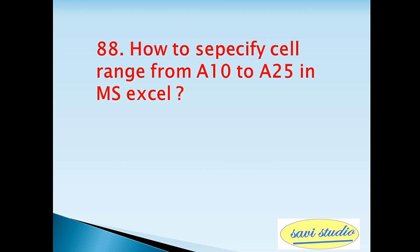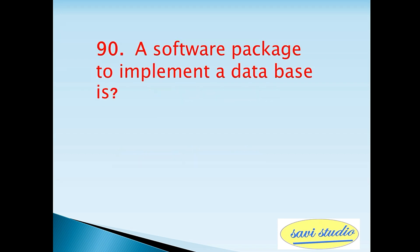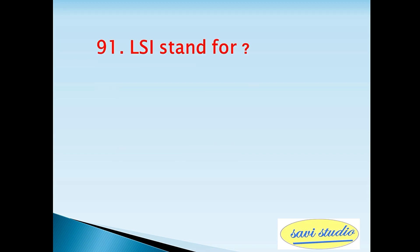Eighty-eighth question: how to specify cell range from A10 to A25 in MS Excel? Answer: A10:A25. Eighty-ninth question: if you change Windows 98 OS to Windows XP, then it is known as — answer: upgrade.